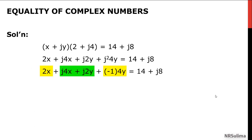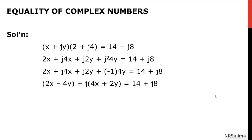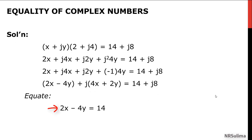Group like terms to form a complex number whose real part is 2X minus 4Y and whose imaginary part is 4X plus 2Y. To solve for the values of X and Y, we equate the real parts and the imaginary parts of both the left-hand and the right-hand side of the equation. With that, we have 2X minus 4Y equal to 14 and 4X plus 2Y equal to 8.